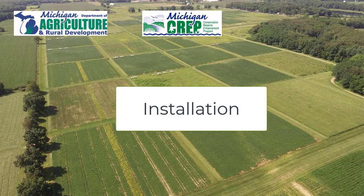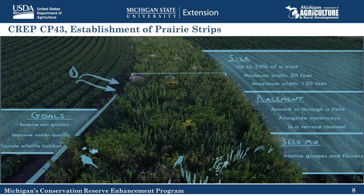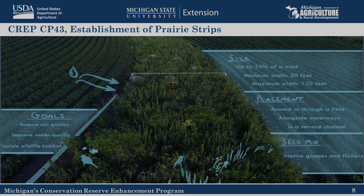The CP43 program provides some guidelines for what we can and can't do in regards to putting prairie strips. These prairie strips have to be at least 30 feet wide but no wider than 120 feet, and they can be as long as you want — the whole length of your field or just part of it. You also can't put more than 25 percent of a total field into prairie strips.